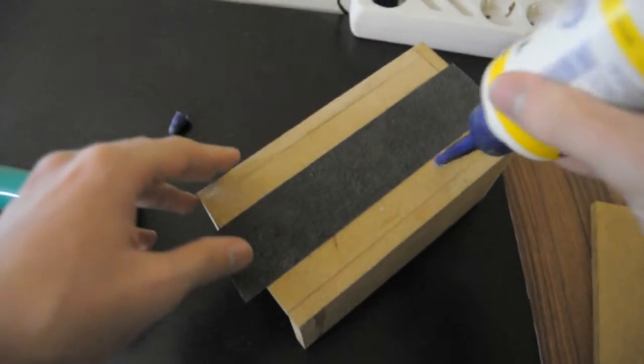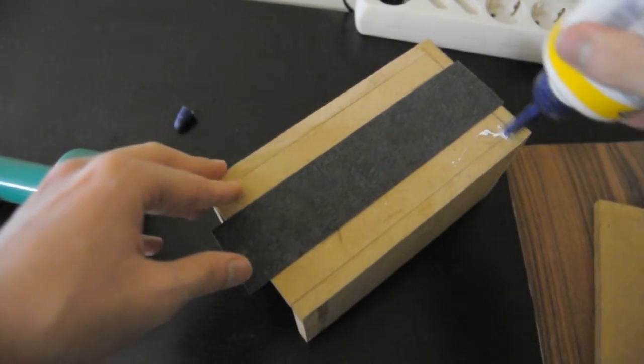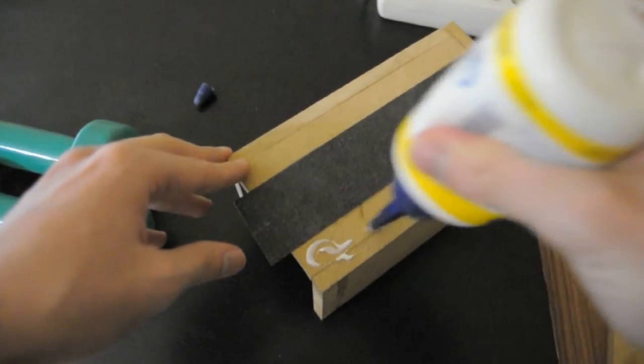I smeared PVA wood glue and placed veneer and some edging tape one side at a time.